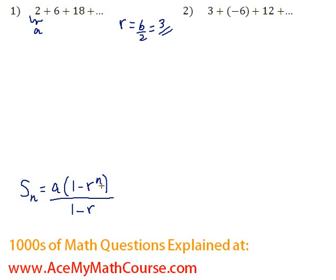And what about n? Because they want to add the first 7 terms, n is 7. So S7 is going to be equal to a times 1 minus, so r is 3. So we have 3 to the power of 7, since n is 7, all over 1 minus 3.